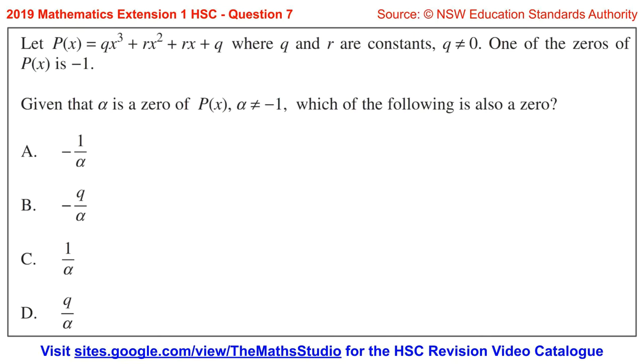Question 7. Let P(x) = qx³ + rx² + rx + q, where q and r are constants, q ≠ 0.